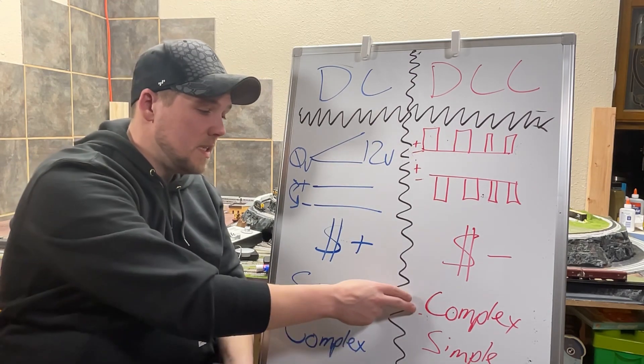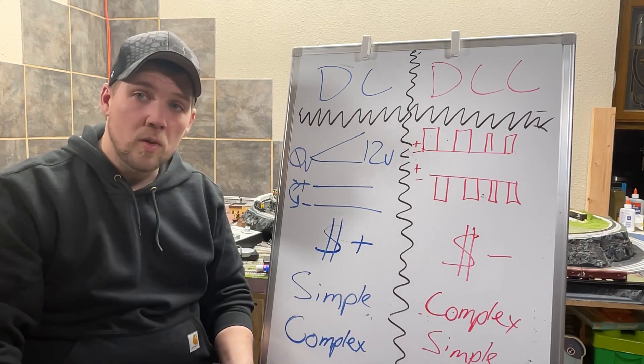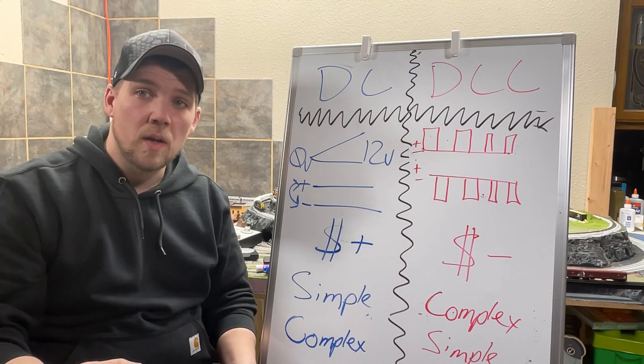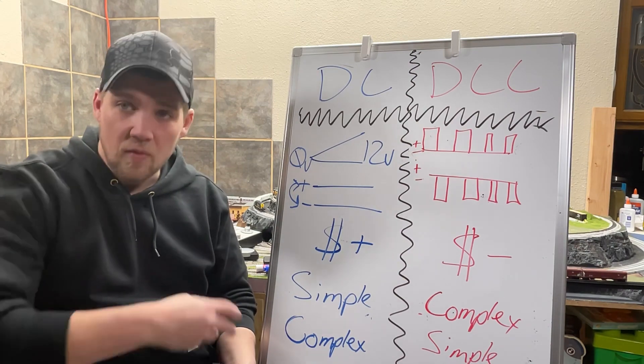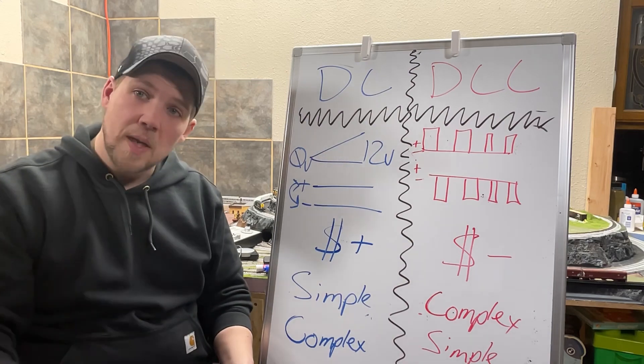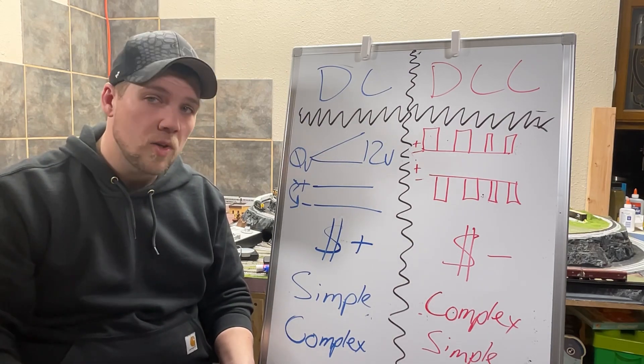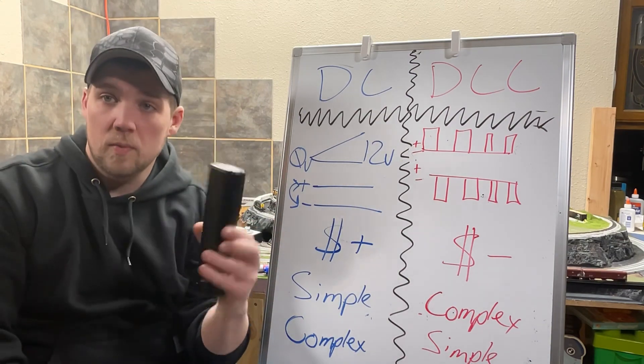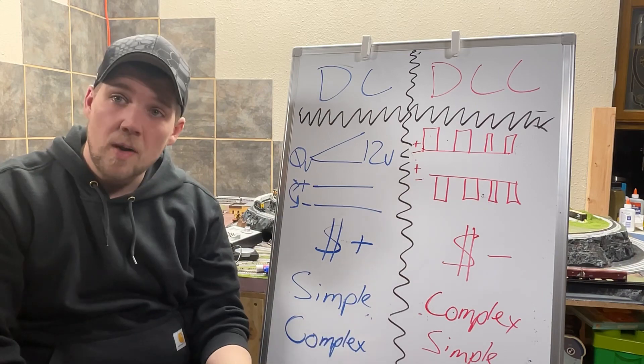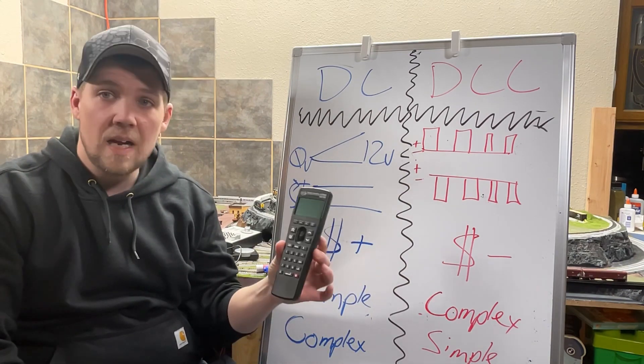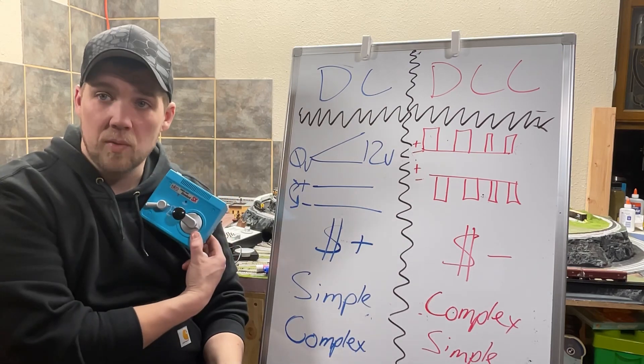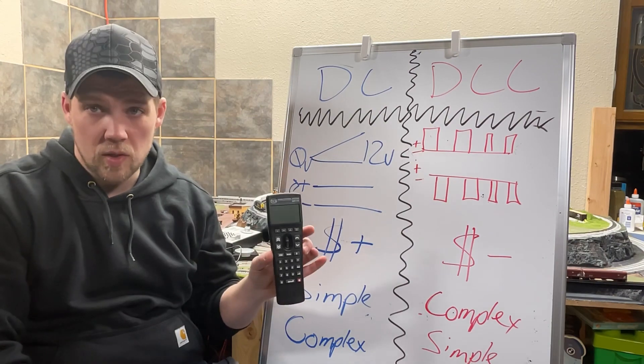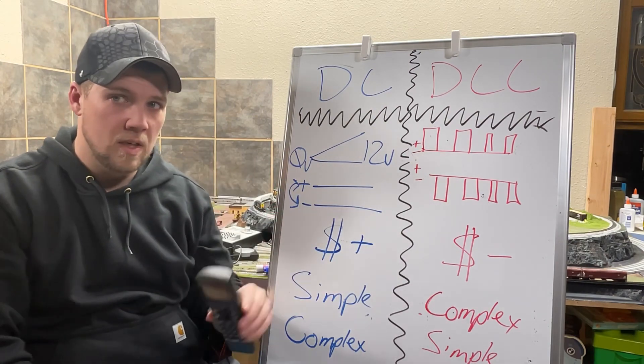However, on a DCC system, you need to learn to program all of your locomotives to their proper road addresses. So, by default, they're all on address three. So you go to run one locomotive, and all of them start moving. You need to learn to speed match those to make them work together. You need to learn how to call up different systems. If you're inside of your remote or throttle, there are lots of sub-menus you need to learn. It's not just as simple as picking up one of these and forward and backwards easy. There are lots of different things you can do. So there is a learning curve to getting started in DCC.